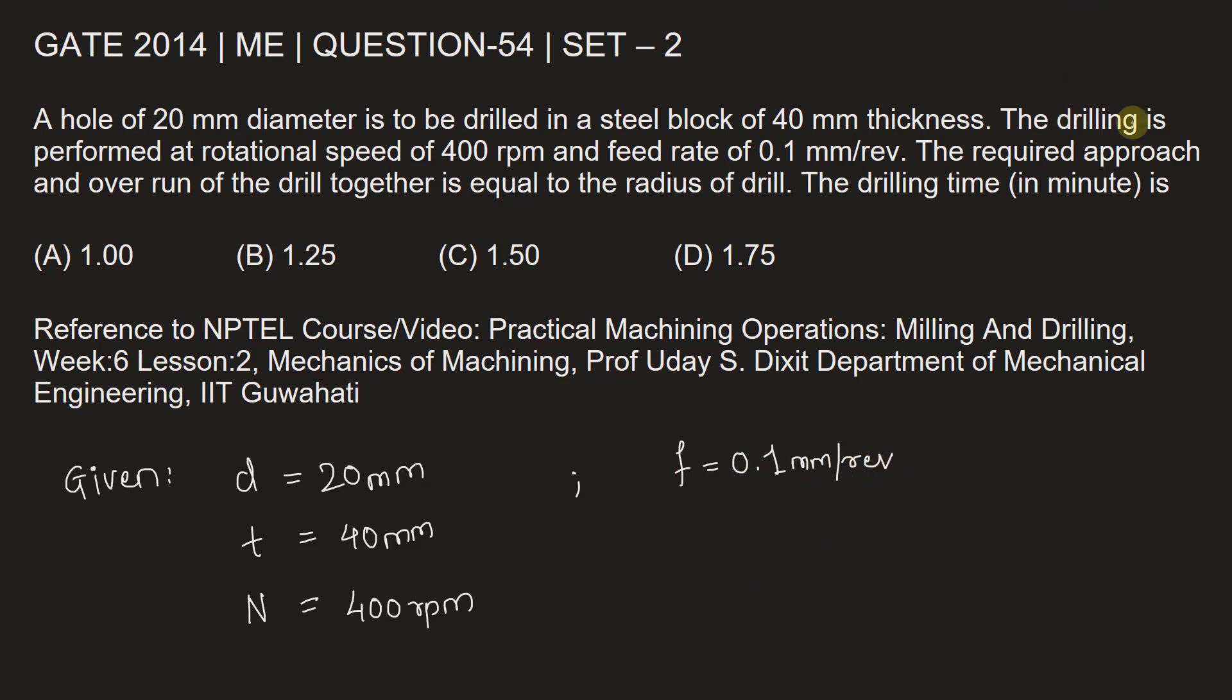It's given that the required approach and overrun of the drill together is equal to the radius of the drill. That means if we say approach as AP and overrun as OR, AP plus OR together are equal to the radius of the drill. That means it will be 20 by 2, which is 10 millimeters. We are taking the radius of the drill and radius of the hole as equal.